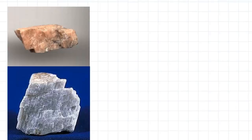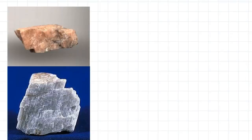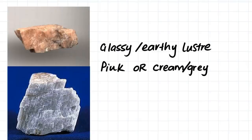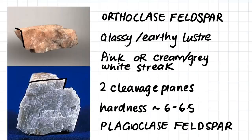This is our last mineral sample. It doesn't actually come up on our table, but it's rather important so I'm going to go over it anyway. This mineral has an earthy or glassy luster. It can have a pinky color or a cream-grey color. It also has a white streak. It has two cleavage planes, and a hardness of around 6 to 6.5. These samples are both feldspar minerals, but they're slightly different. The one with the pinky coloration is orthoclase feldspar, which often has this pink coloration. Whereas the other feldspar is plagioclase feldspar, which is normally creamy or grey. These two minerals don't show up on our reference table, but they're very important minerals present in a lot of igneous rocks.